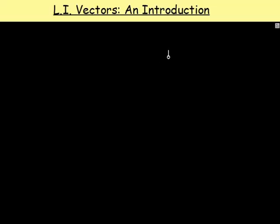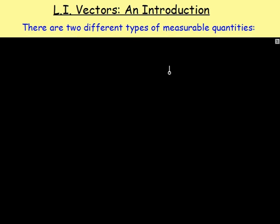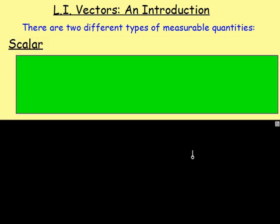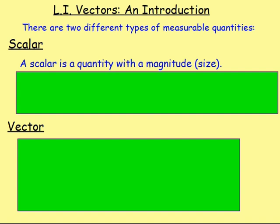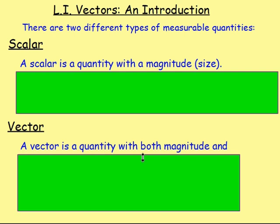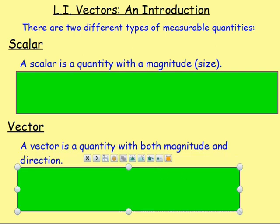The first question on everybody's mind is: what is a vector? Well, if you think about different things that can be measured, you get two different types. One of them is a scalar, and the other one is a vector. A scalar is a quantity with a magnitude, which is a size. A vector also has a magnitude, but it's also got a direction attached to it.